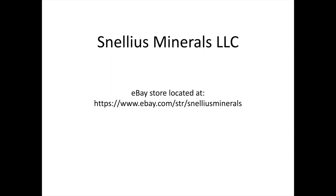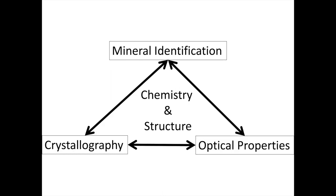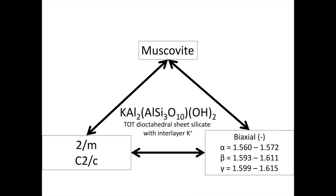Let's start exploring muscovite mica. I always like to start by taking a look at the big picture whenever we're examining minerals. Our minerals are defined by their chemistry and structure, which determines the crystallography we see at the macro scale as well as the optical properties — all these things are linked together. Muscovite probably has the most complicated chemistry and most complicated structure of any mineral we've looked at so far.